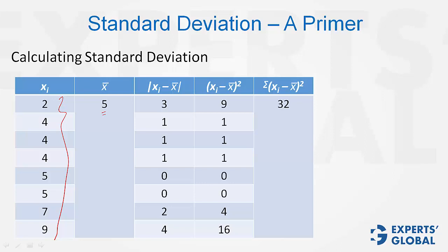And then, take the difference between each score and the average. Don't worry about the sign; that is why the mod sign. So, 2 and 5, the difference is 3; 4 and 5, the difference is 1. Likewise.